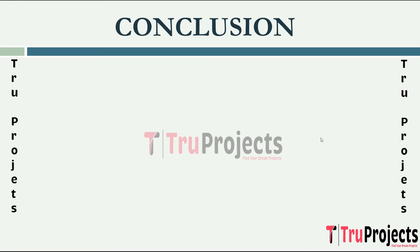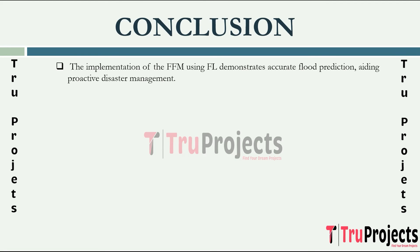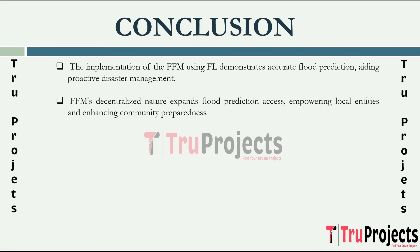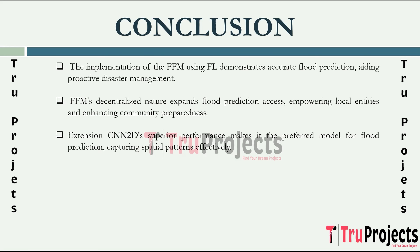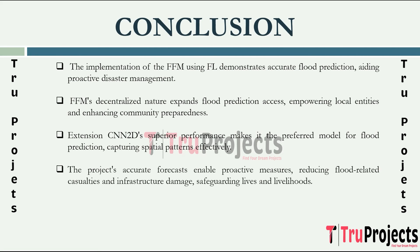Conclusion of the project: The implementation of the flood forecasting model based on federated learning demonstrates promising results in accurately predicting flood occurrences, contributing to proactive disaster management and mitigation efforts. The decentralized nature of the FFM allows for wider access to flood prediction capabilities, empowering local entities to train models using regional datasets and fostering community-level preparedness. After rigorous evaluation, the extension CNN 2D emerges with the lowest error rate among implemented models and is selected as the preferred model for flood prediction. Its superior performance underscores its suitability for capturing spatial patterns in flood-related data. Overall, the project contributes to the reduction of flood-related casualties and infrastructure damage by providing timely and accurate flood forecasts, enabling authorities to implement proactive measures for disaster preparedness, response, and recovery.